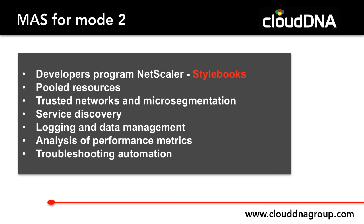Micro-segmentation in Mode 2 separates pre-production, development, and production traffic, reducing security risk and internal app-to-app DDoS threats — even bordering on APIs and IoT scenarios. Service discovery allows applications spun up in a dynamic environment to find and communicate with each other effectively to support business processes. Logging and data management supports a thousand instances currently, moving to ten thousand by the end of the year.